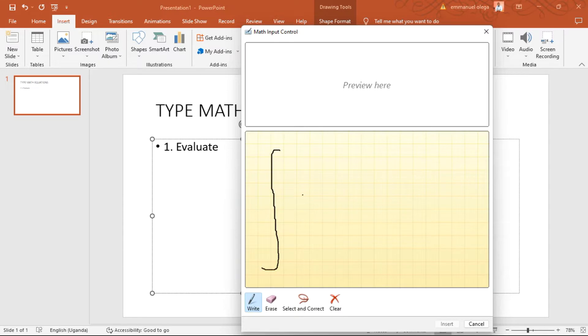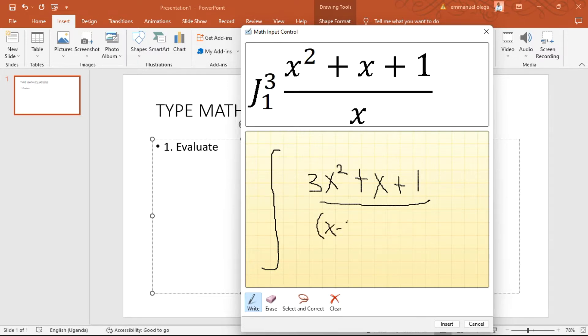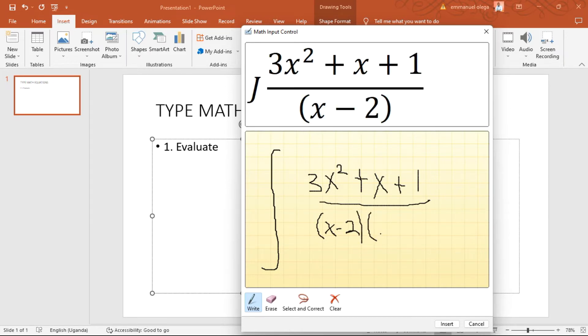I'm going to draw an integral sign, then it's just going to interpret it. So I'm going to type in some values: 3x squared plus x plus one over x minus 2 into x plus 1.